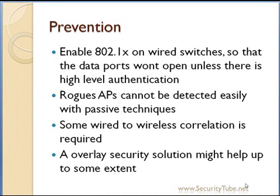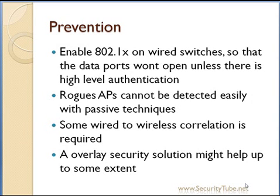You will naturally ask how to prevent rogue access points in your environment. A simple suggestion: enable 802.1x on your wired switches — this will pretty much solve your problem. By enabling 802.1x on your wired switches, you are asking every device to authenticate to your enterprise server, like a RADIUS server, before doing any data transfer. When you connect an access point, only EAP ports are open, which are just used for higher-layer authentication.